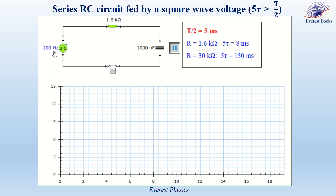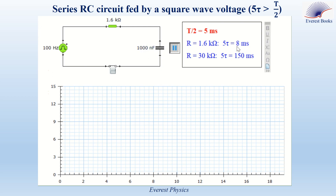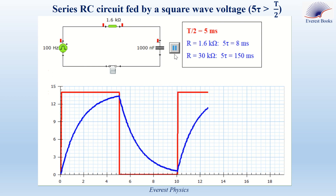Consider a series RC circuit fed by a square wave voltage of frequency 100 Hz. The period T equals 1/f equals 10 ms, so T/2 equals 5 ms. We study UC during charging and discharging in two cases. In the first case, with R equals 1.6 kΩ and C equals 1000 nF, 5 tau equals 5RC equals 8 ms, so 5 tau is greater than T/2. Observing the curves: the red curve represents the function generator voltage and the blue curve represents the capacitor voltage. We observe that the steady state is not attained — the capacitor neither charges nor discharges completely.